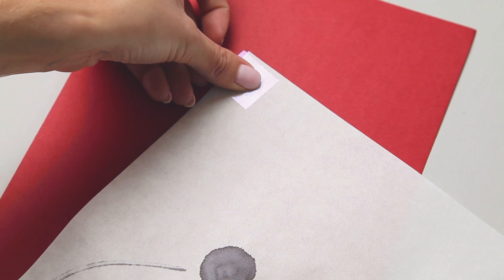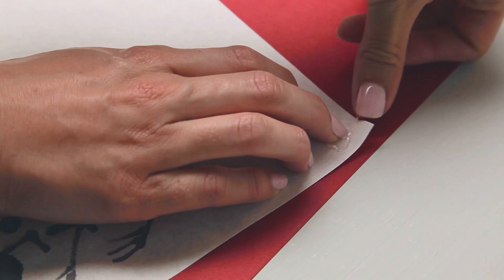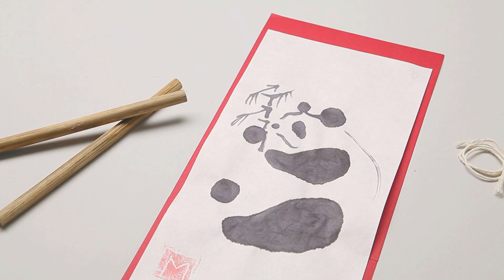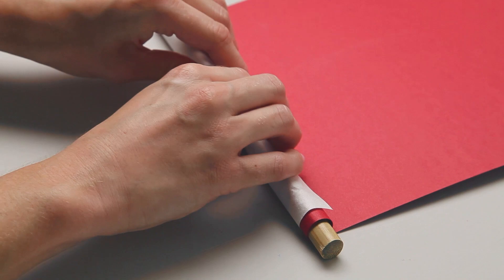Once you're a Sumi master, you can paint a masterpiece on your rice paper and mount it. Flip your finished painting over, and attach glue dots to each of the corners. Flip your painting back over, and firmly mount it onto the red paper.